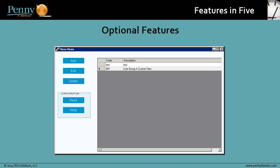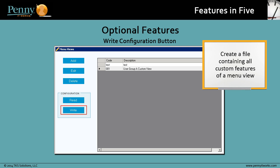Last, let's take a quick look at two optional features that support menu views. The Write Configuration button enables you to create a file containing all the custom features of a menu view. This is useful if you need to provide the menu view to Penny support. The Read Configuration button enables you to load a file of a menu view into another instance of Penny — for example, if you need to transfer a menu view from QA to production.